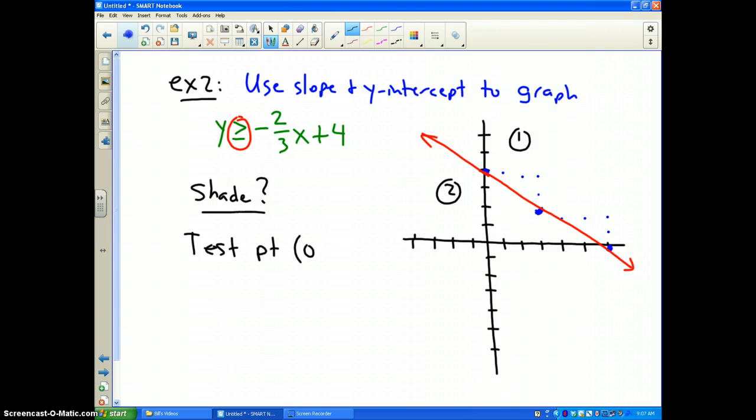So, we're going to test the point (0, 0). And, I'm going to rewrite my inequality: y is greater than or equal to negative 2/3x plus 4. Now, I do have a place to put the x. So, I'm going to put zero in for x, and I'm going to take that zero and put it in for y. And, find out, is this a true statement or not?